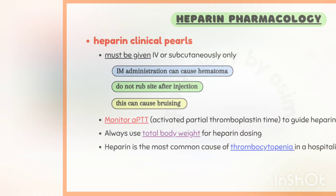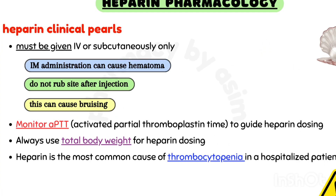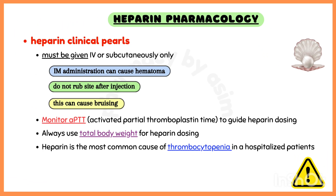Some clinical pearls for heparin: it must be given IV or subcutaneously only, as intramuscular administration can cause hematoma. Do not rub the injection site after injection, as this can cause bruising. Monitor aPTT (activated partial thromboplastin time) to guide heparin dosing, and always use total body weight for dosing.